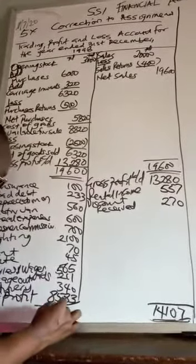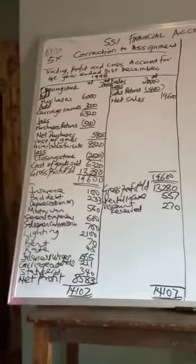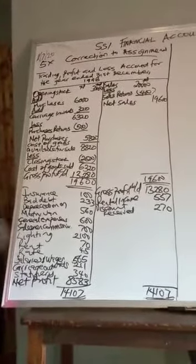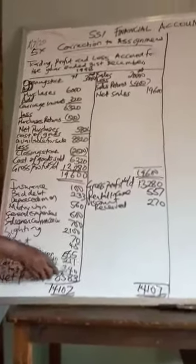14,107. So this is the end for the trading profit and loss, and this is the correction. Two of you scored the low mark. I don't know what happened. You did not get the net profit correctly.